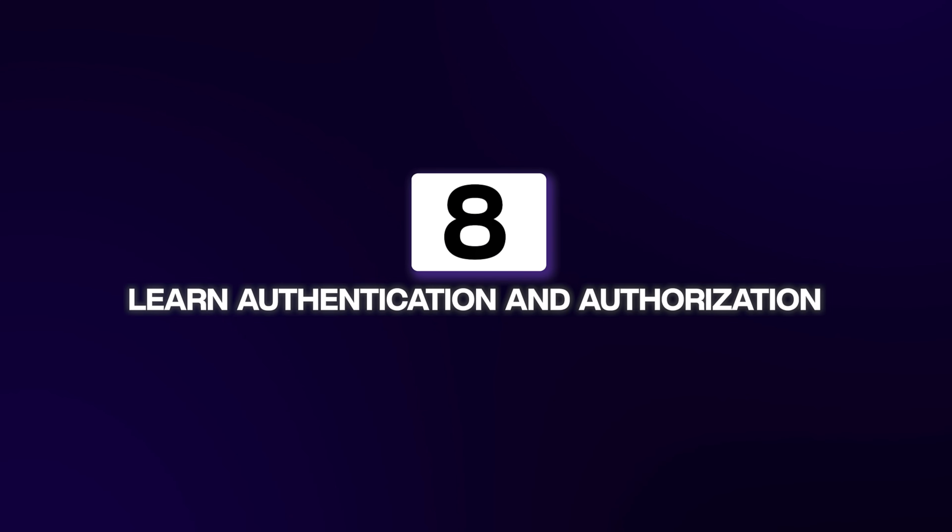Step eight is to learn authentication and authorization. If you want different users on your application, authentication and security become essential. Users need to be able to register, log in, and perform actions in a secure way. As a back-end developer, it's your responsibility to implement this correctly and protect data from leaks. Authentication is verifying someone is who they really are, while authorization is verifying that they're allowed to do what they're trying to do. Both are crucial: authentication ensures the user is who they say they are, and authorization ensures they can only access what is meant for them.